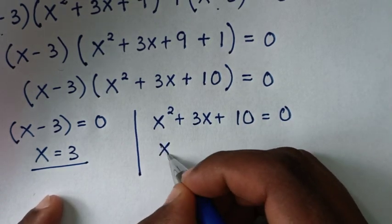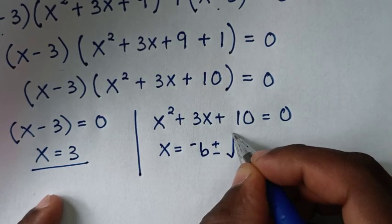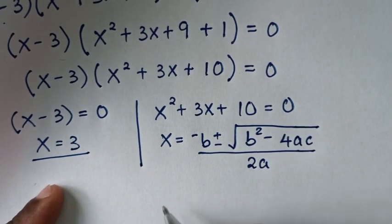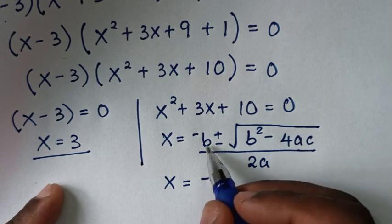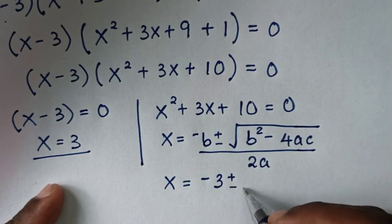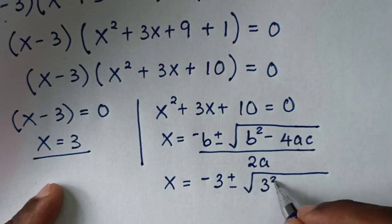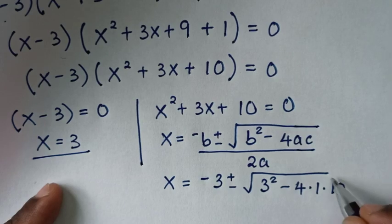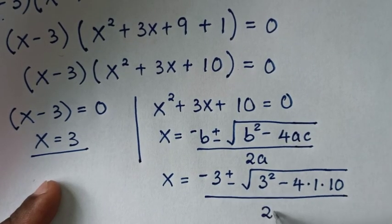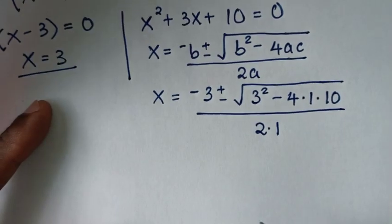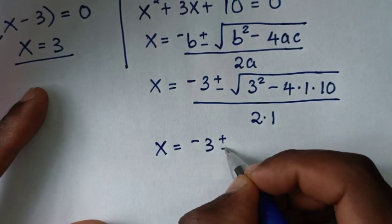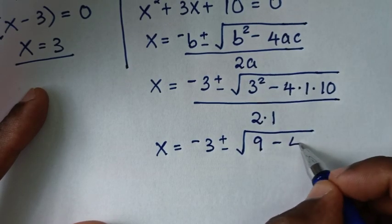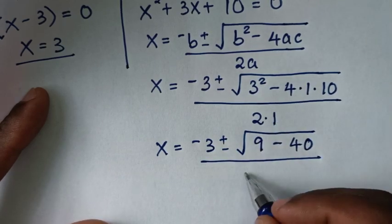The quadratic formula is x = (-b ± √(b² - 4ac)) / 2a. Here b is the coefficient of x which is 3, a = 1, and c = 10. So it will be x = (-3 ± √(3² - 4 × 1 × 10)) / (2 × 1).